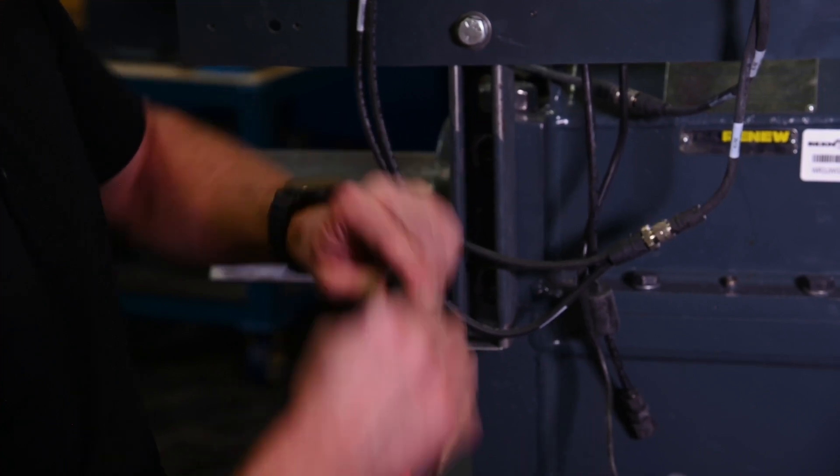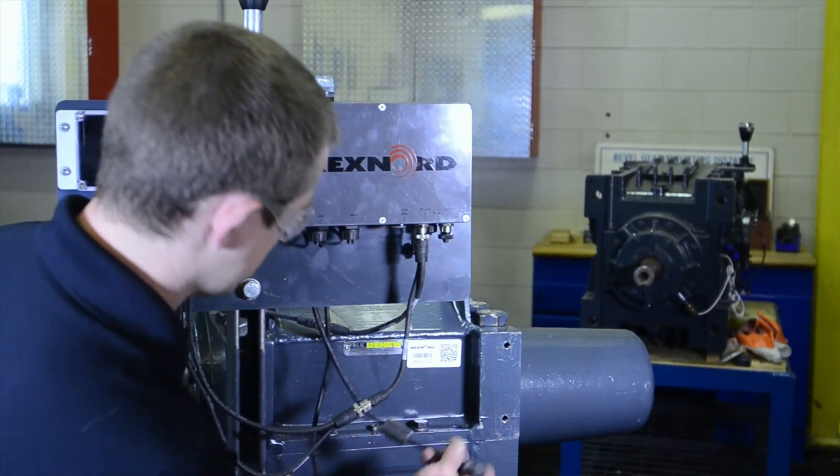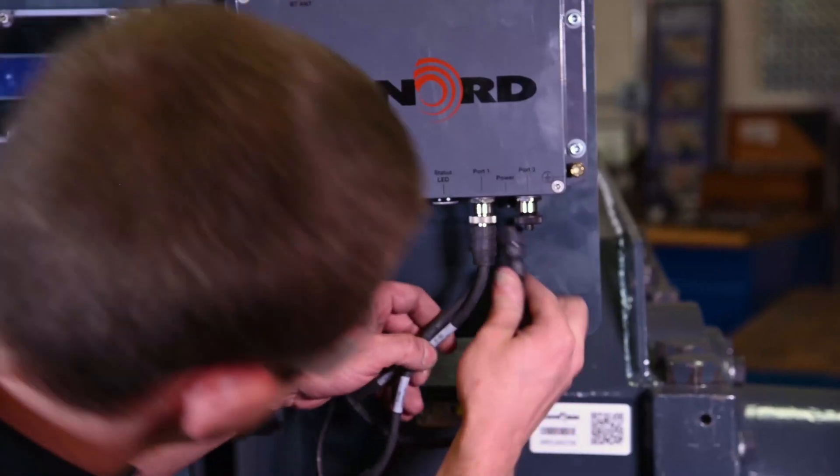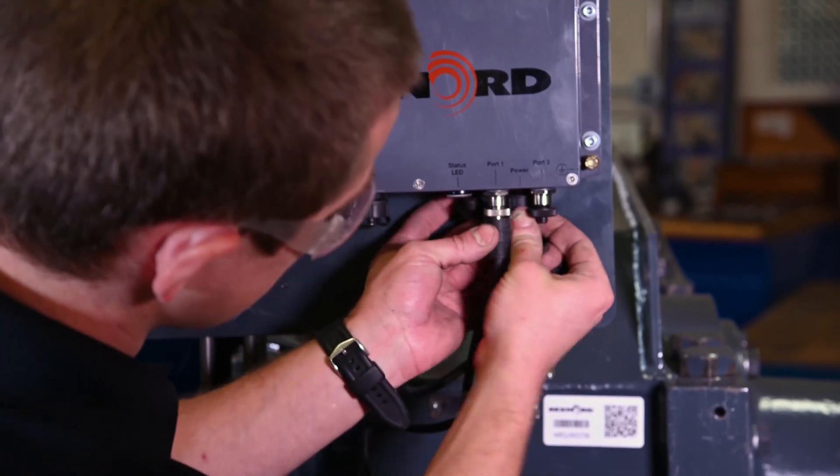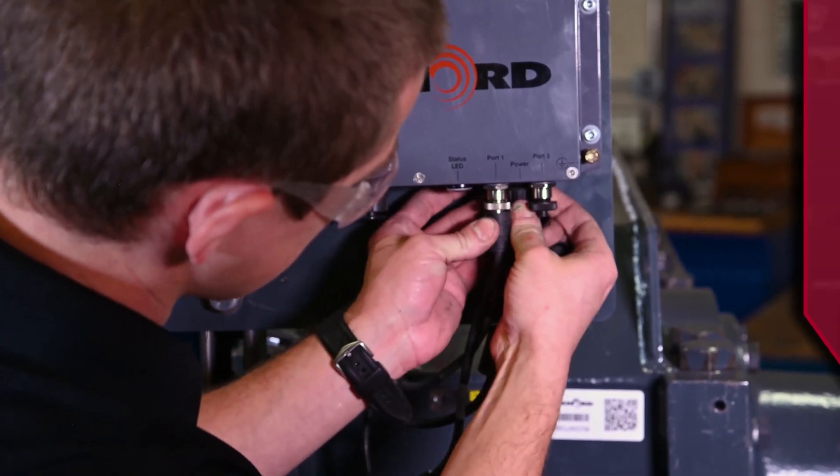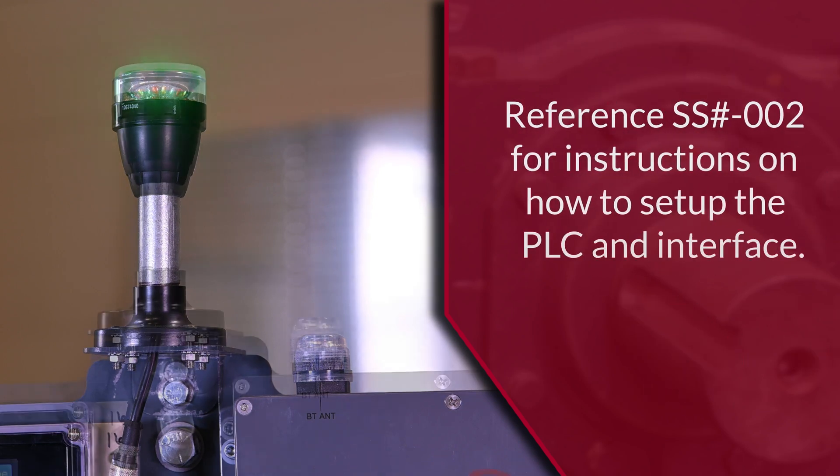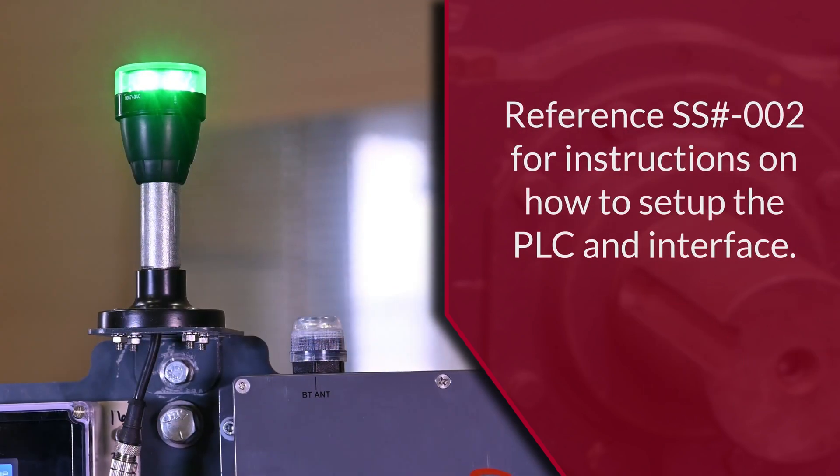To power the edge device, remove the cover on the power connector located on the base of the edge device. Screw in the power connector and the edge device can now be safely powered on. After a few minutes, the edge device will fully boot up and the Andon light will illuminate, indicating the status of the drive.